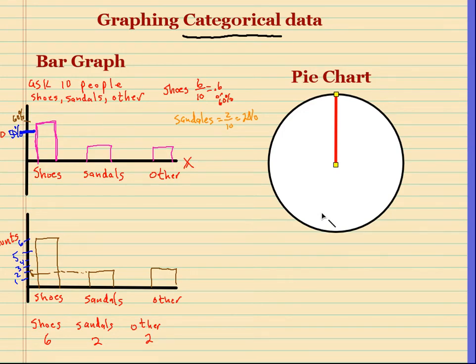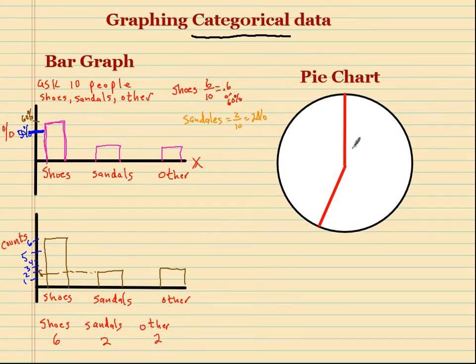Okay, and then I want to cut this thing a little bit more than half. A little bit more than half. Okay, so this is going to be my shoes, which account for 60% of the whole.